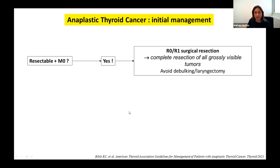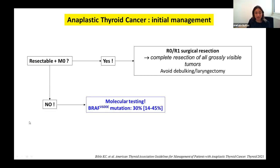The two key questions when dealing with a patient with ATC are: is the tumor entirely resectable, and is the patient M0? If the answers are yes, then R0 or R1 surgical resection should be performed — meaning complete resection of all grossly visible tumor — and debulking as well as laryngectomy are not recommended. If the patient has distant metastases or the tumor is not resectable, molecular testing plays a key role, especially BRAF V600E mutation testing, found in around 30% of ATCs, ranging from 14% to 45% across series.